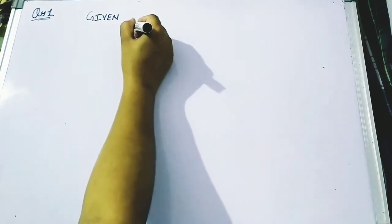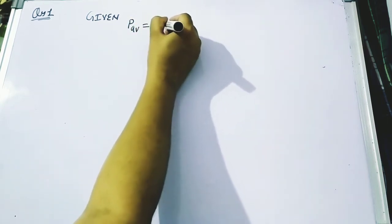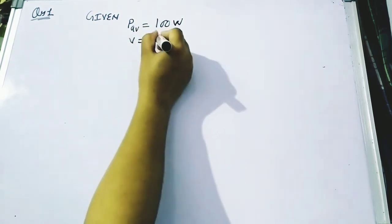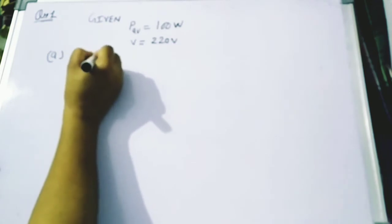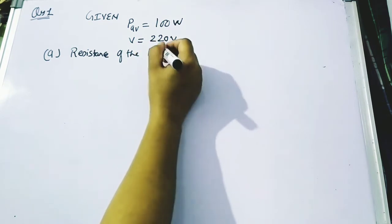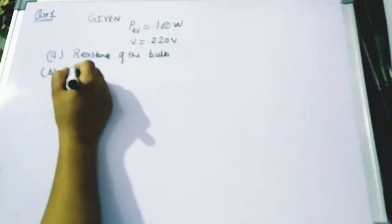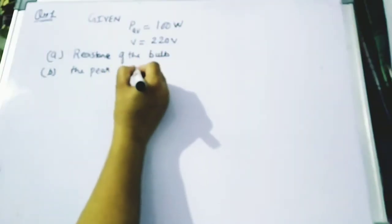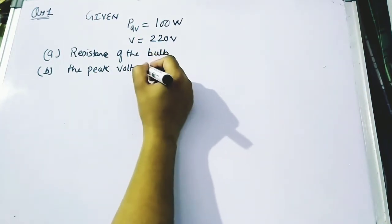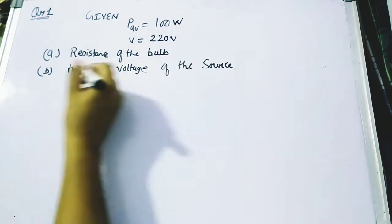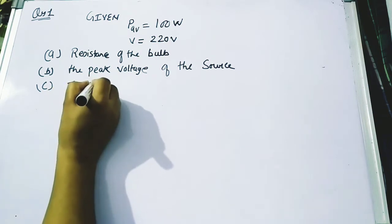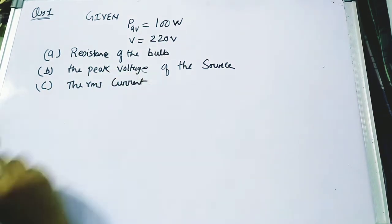Now we are going to start with the problem. The first problem states: a light bulb is rated at 100 watt for a 220 volt supply. We have to calculate three things: first, the resistance of the bulb; second, the peak voltage of the source; and third, the RMS root mean square value of the current through the bulb.